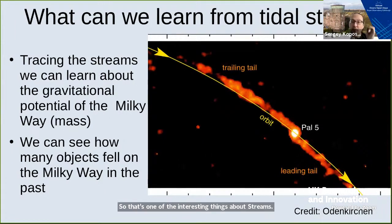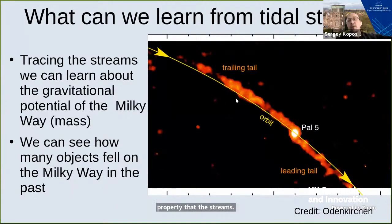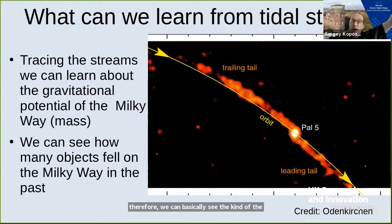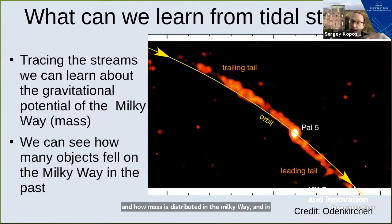Streams are also interesting because they roughly trace the trajectory of the parent cluster. We can see the footprints the cluster essentially leaves when it moves throughout the galaxy, and that can help us determine how massive the Milky Way is and how mass is distributed in it. In particular, that can help us measure the distribution of dark matter, which is very exciting.